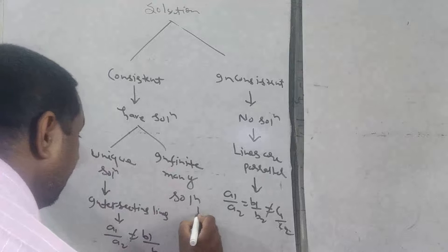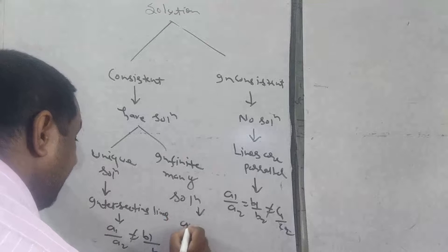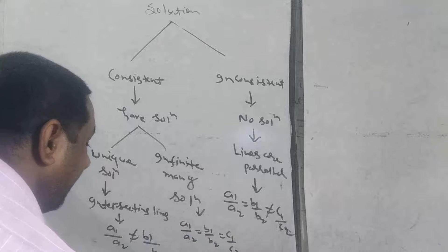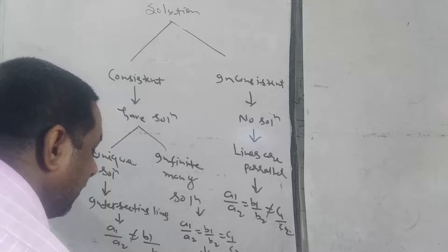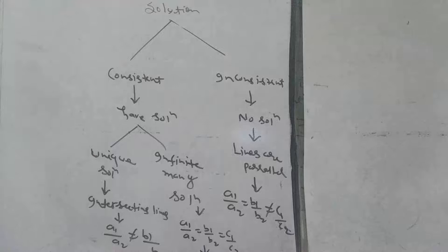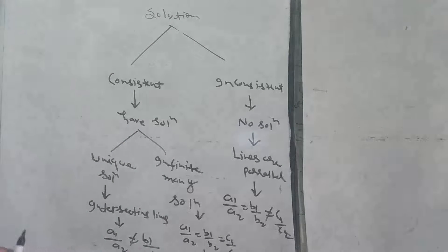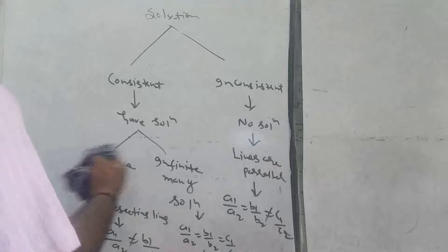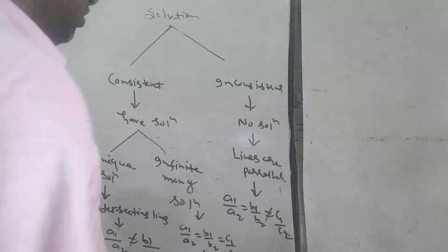And for infinitely many solution, the condition is A1 by A2 equals B1 by B2 equals C1 by C2. That is overlapped lines. So these are the conditions of the solution. How can you identify if the given system of equations has a unique solution, infinitely many solution, or no solution?